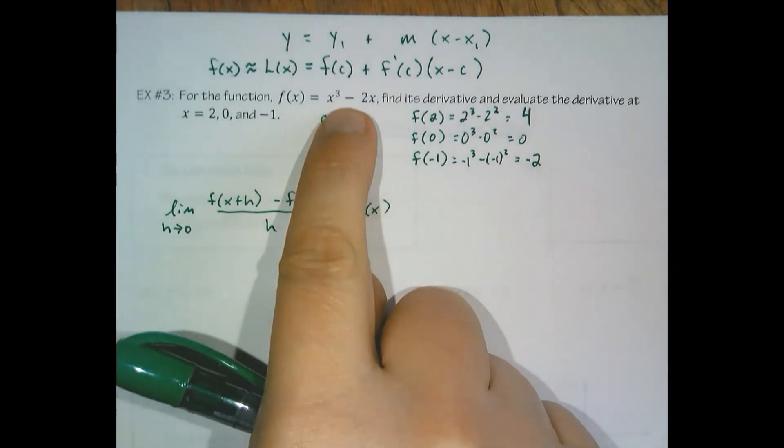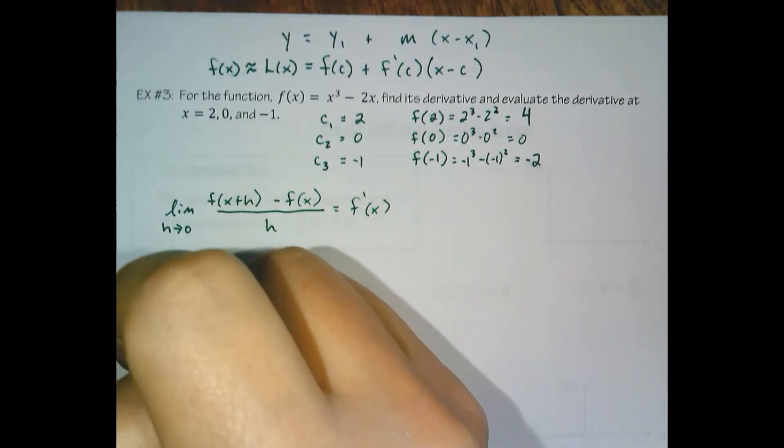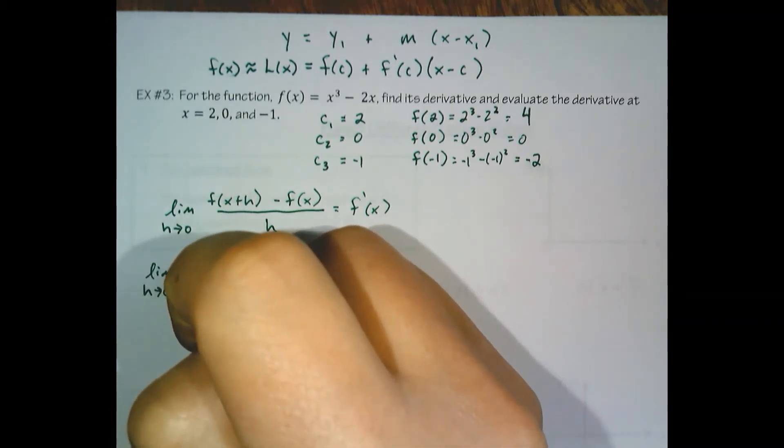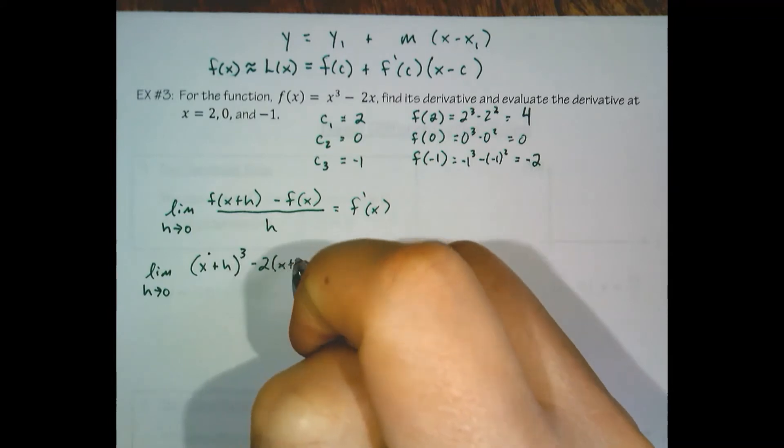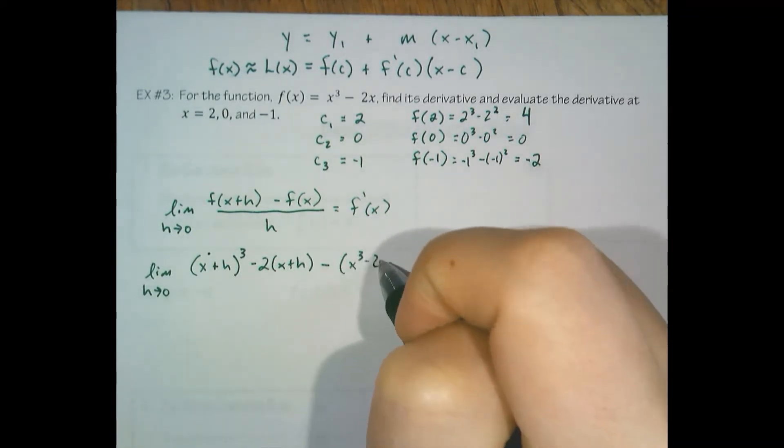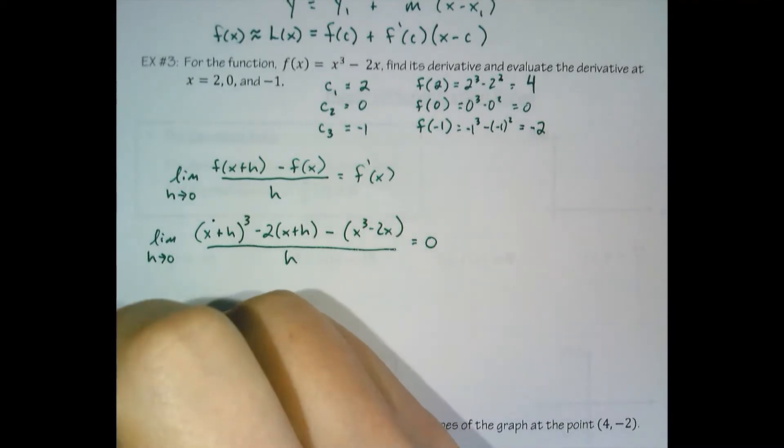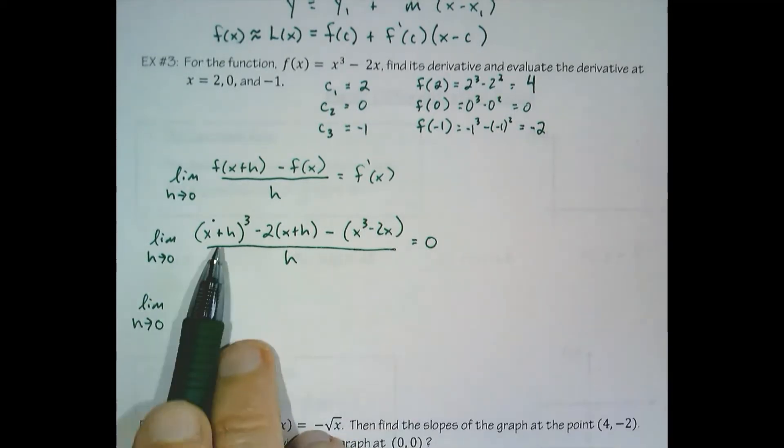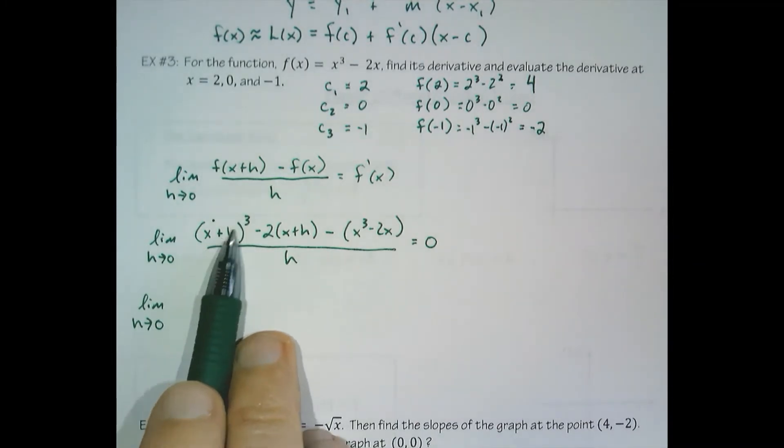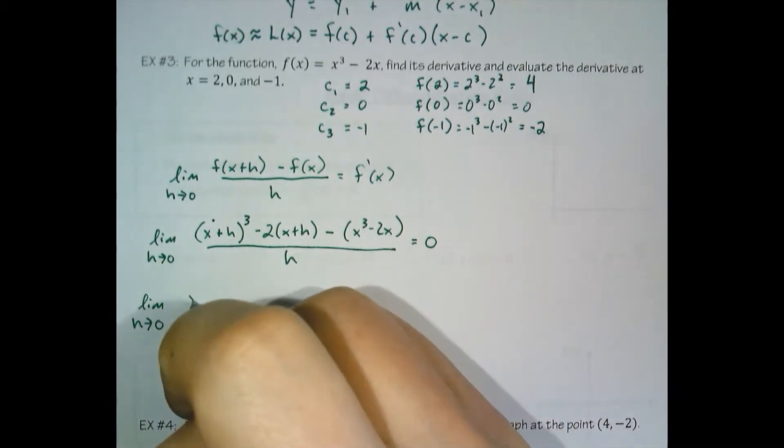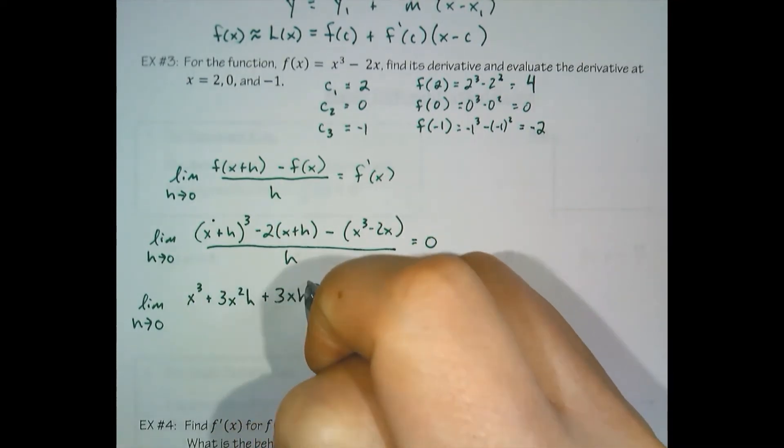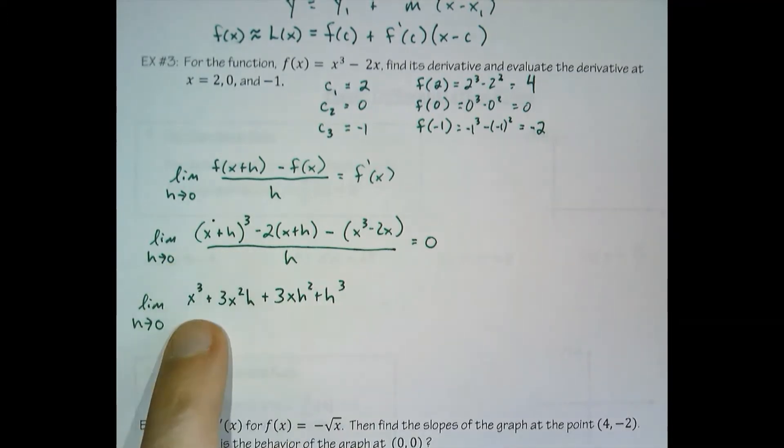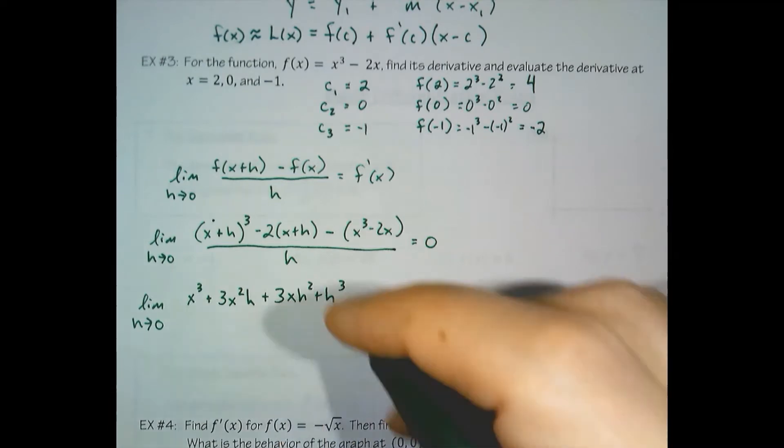And we have a pretty tricky equation here when it comes to expanding this all out. What would need to happen is you would need to either use Pascal's triangle or foil this twice in order to handle that x cubed power. I'm going to go ahead and write out what it expands to.